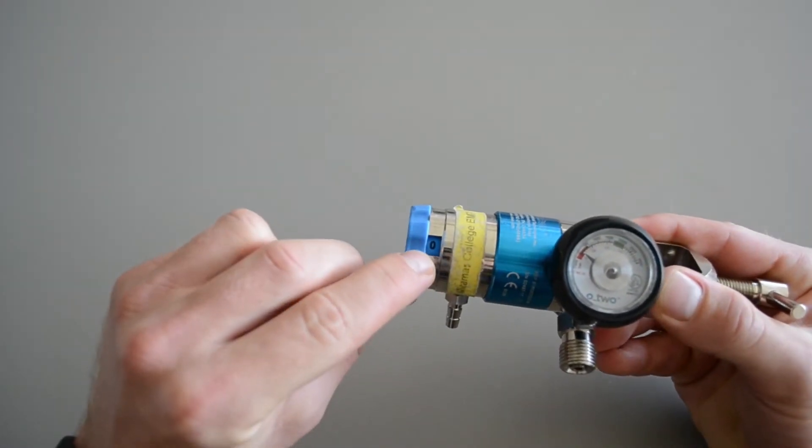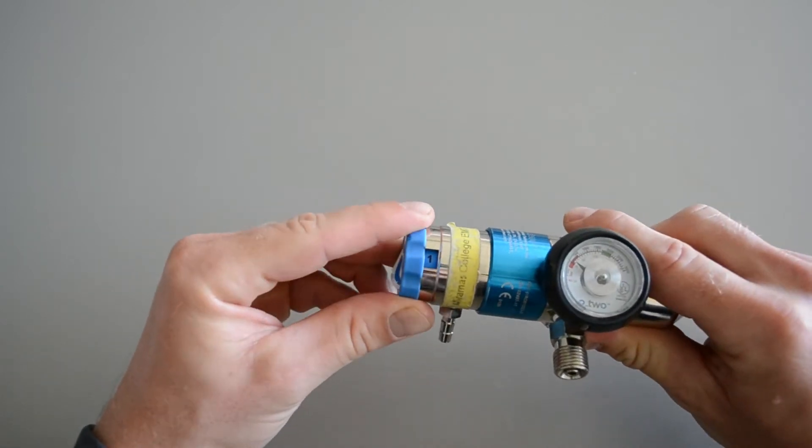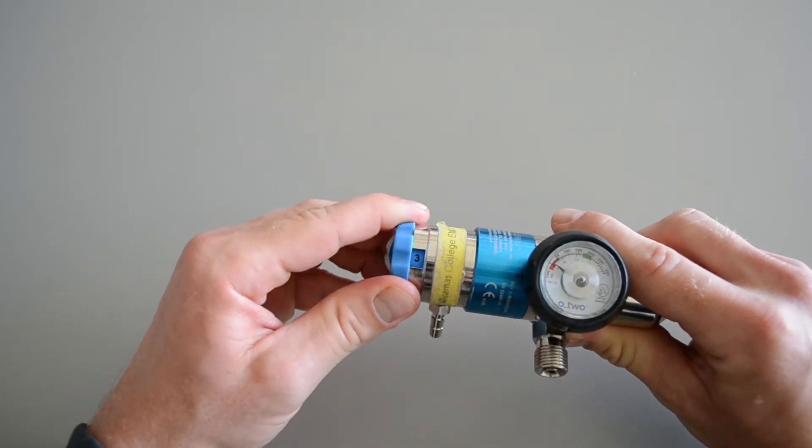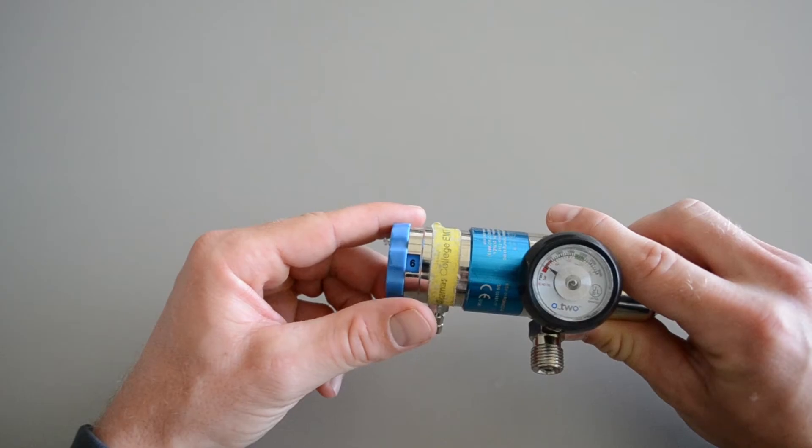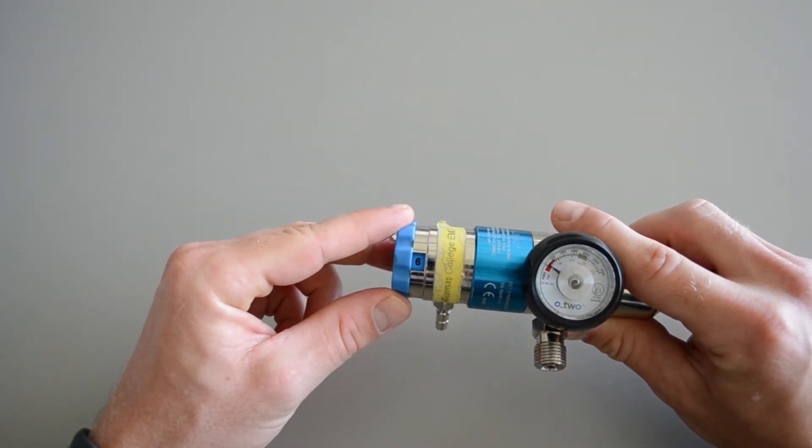This is your flow rate dial. This allows you to turn to the specified liter per minute flow that you would like. So it starts here at 1, goes to 2, then 3, 4, jumps up to 6. So that will be your flow rate for a nasal cannula, anywhere from 1 to 6 liters a minute.